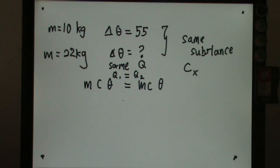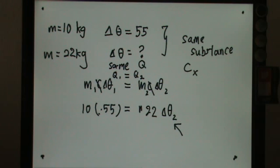So you have M1C theta1. This is supposed to be changes. M2C changes 2. So I can cut off the C because they are of the same substance. So 10 and then 55 here. And then M2 is 22. So there is triangle theta2 here. How much is the change they are interested to find out?